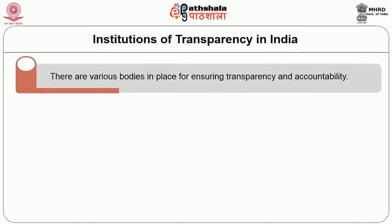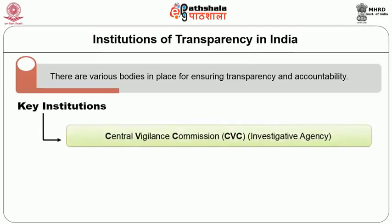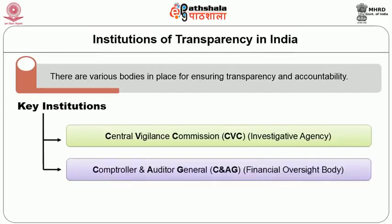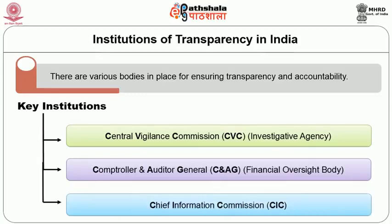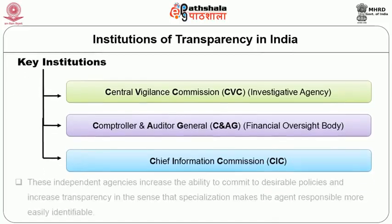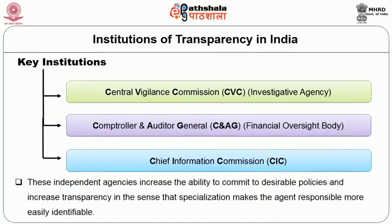There are various bodies in place for ensuring transparency and accountability. At the federal level, key institutions include the Central Vigilance Commission, which is an investigative agency, the Office of the Comptroller and Auditor General, which is the financial oversight body, and the Chief Information Commission, which we will discuss in this chapter. These independent agencies increase the ability to commit to desirable policies and increase transparency, as specialization makes the agent responsible more easily identifiable.